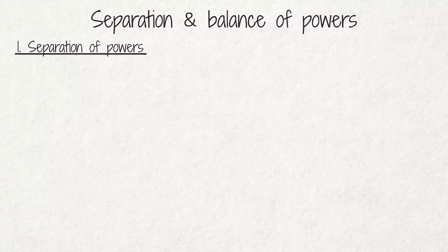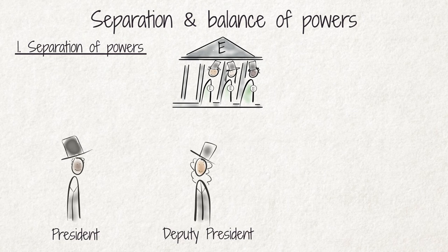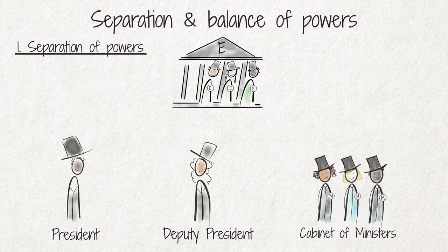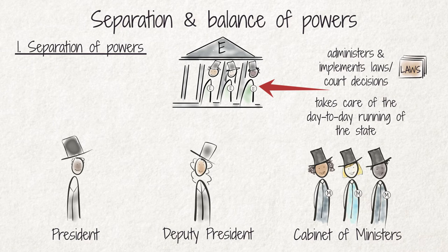The second branch of government, the executive, consists of the president, the deputy president, and the cabinet of ministers. It administers and implements the laws of the legislature and the court decisions of the judiciary. The word government often refers to the executive alone, as it governs the country and takes care of the day-to-day running of the state.